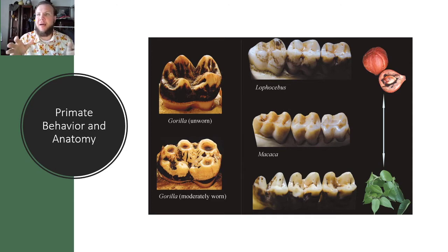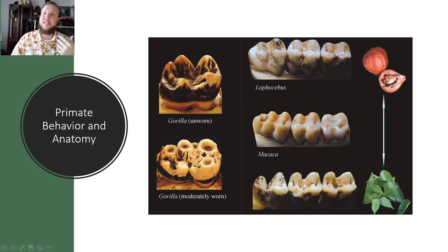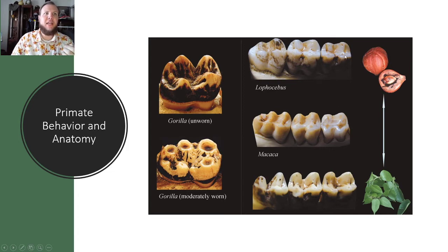Here is an example of anatomy and behavior — a graph showing different types of teeth and what they are adapted to. Down here we have a folivore; you can see how sharp their molars are, creating a grinding surface. Two gorillas are shown — unworn and moderately worn — designed for shredding fibrous foliage. The intermediate form has sharp bicuspids but less pronounced grinding cusps. Frugivores have more rounded teeth since fruit is soft and requires less grinding.